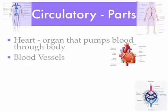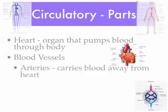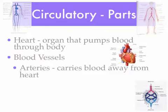Speaking of blood vessels, there are three different types we're going to talk about. The first type are called arteries. Arteries carry blood away from the heart. The way I remember this is arteries starts with the letter A, and arteries carry blood away from the heart. Since arteries are carrying blood away from the heart, the blood is full of oxygen — oxygen rich — and it's carrying blood to the muscles and organs around the body.